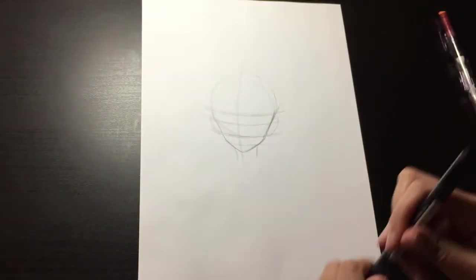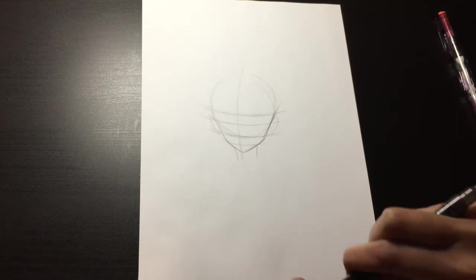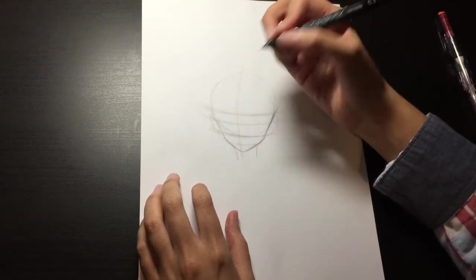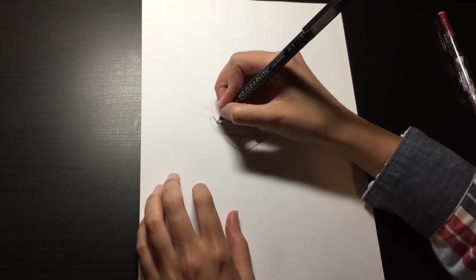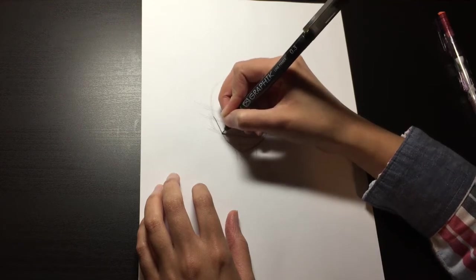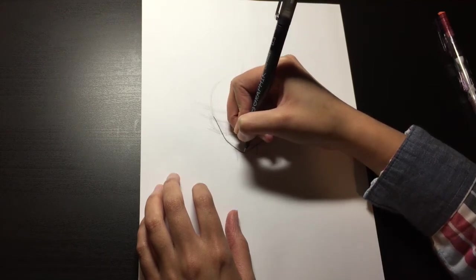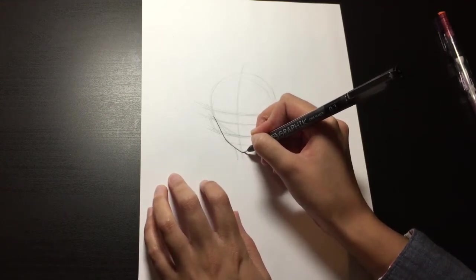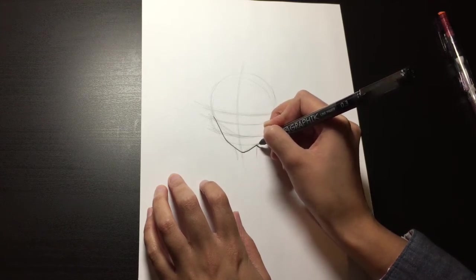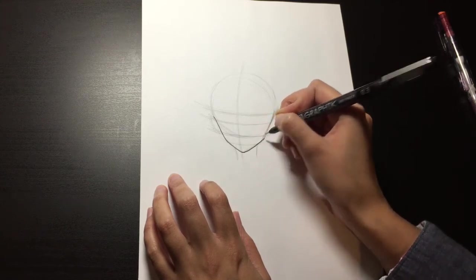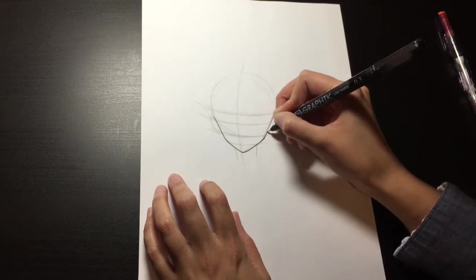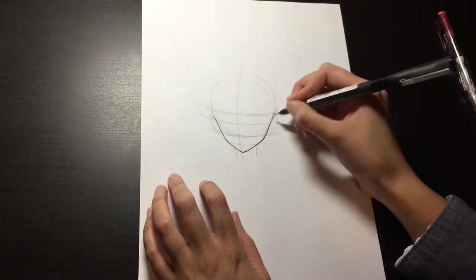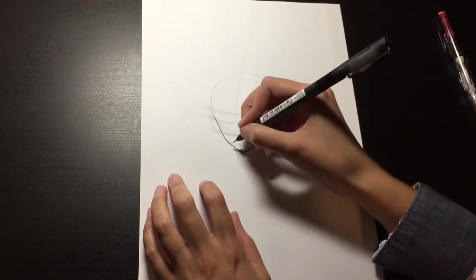So just so you guys can see it a little better, I'm just going to start outlining the basic shape with a pen. For girls, I like to make the chin a little rounded, same with the jaw. Just give it a little curve, not making it too sharp. Okay, so that takes care of the face.